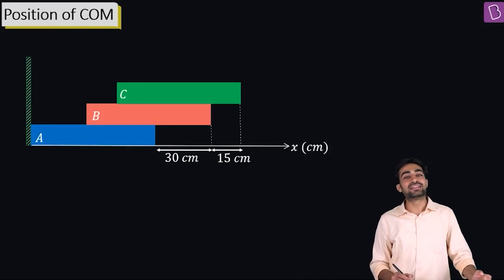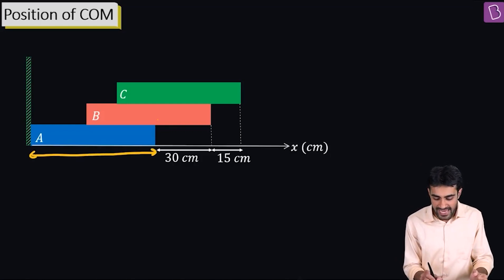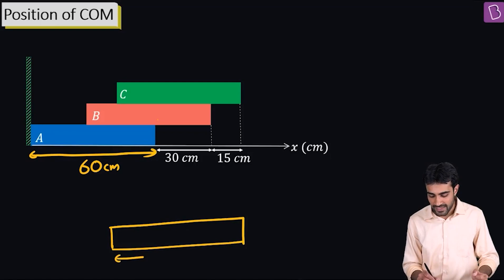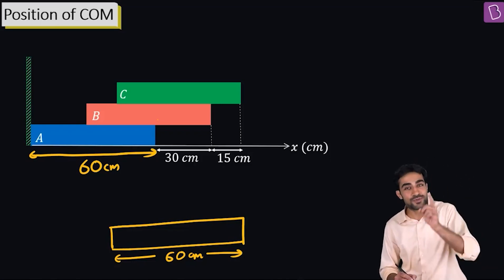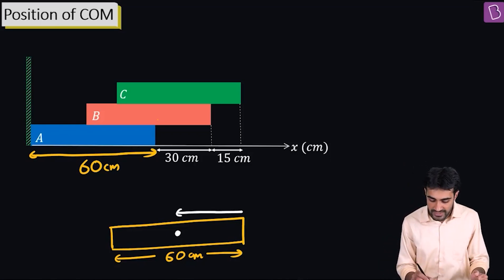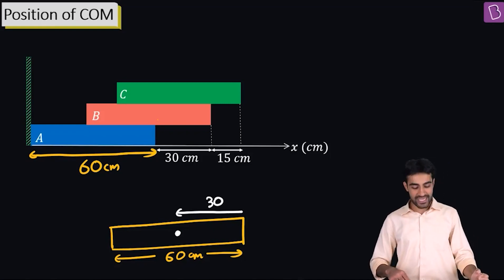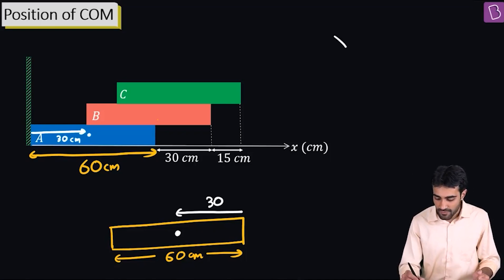Let's find the x-coordinate of the center of mass of the blue brick. The length of each brick is 60 cm. For a uniform brick, the center of mass is at its center. So we move 30 cm from the end of brick A to reach its center of mass. The center of mass of brick A is 30 cm from the wall, so x1 = 30 cm.